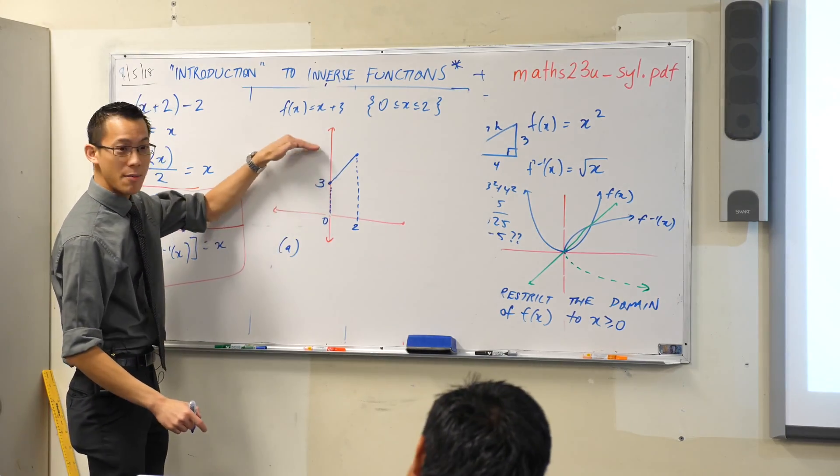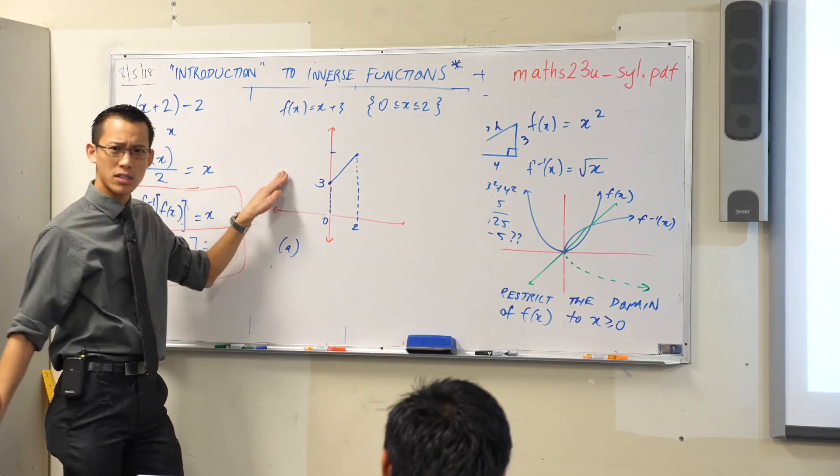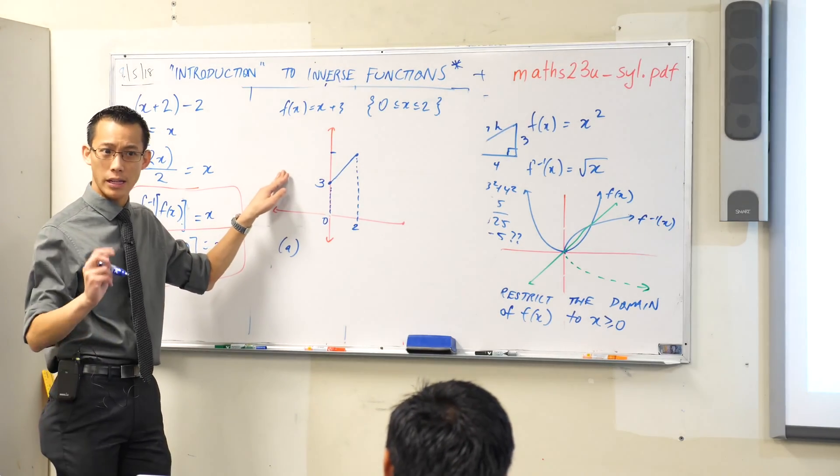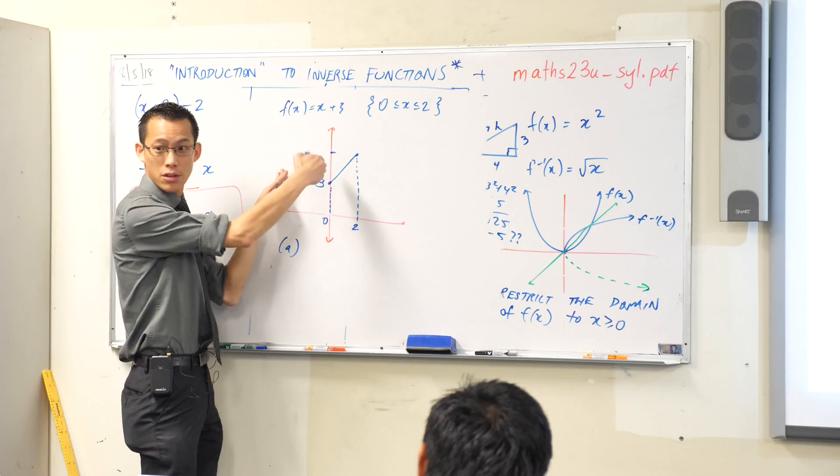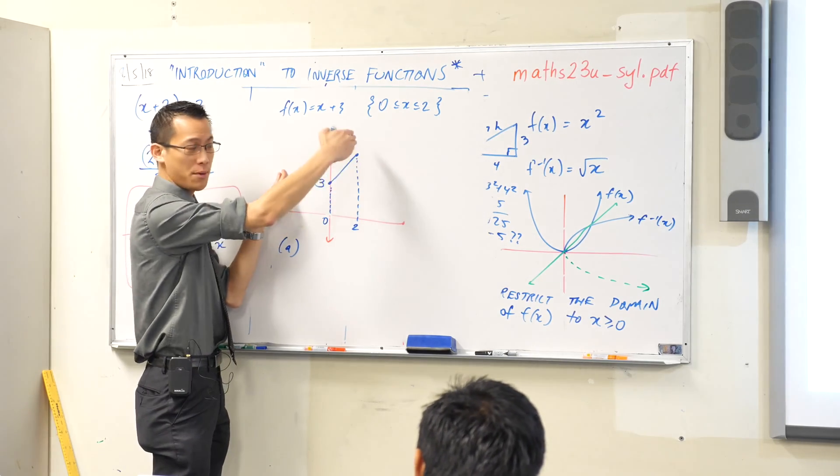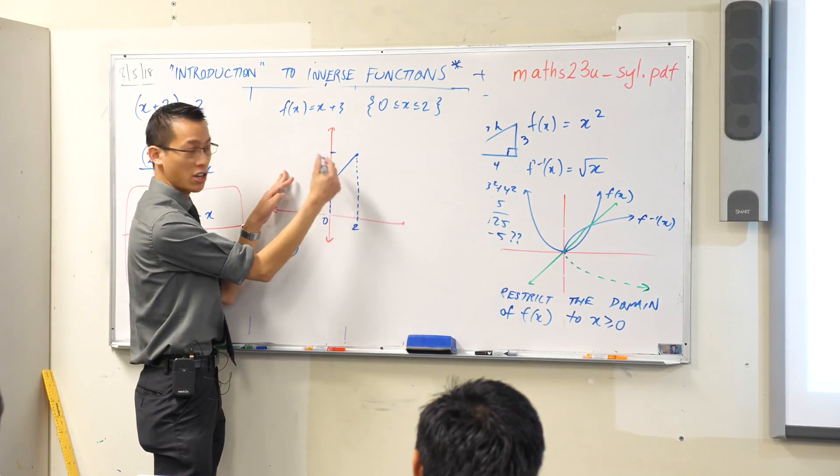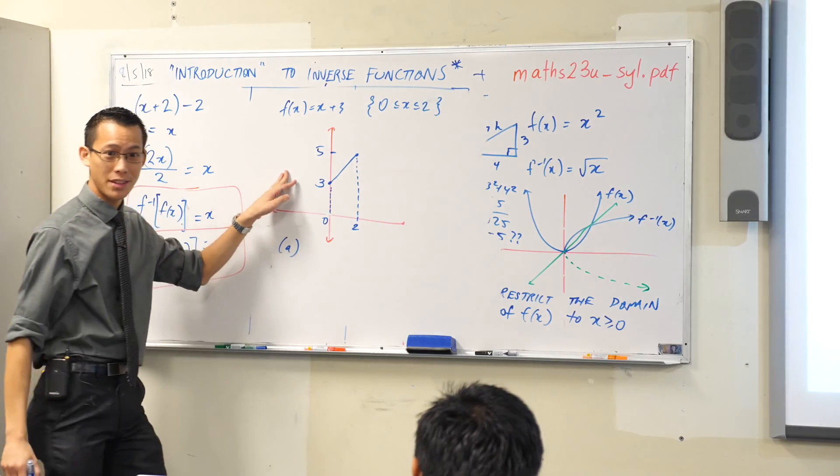And then I go up, I climb up a little bit to here. What's the gradient in this line again? It's 1. So every time I go across a unit, I go up a unit. Across a unit, up a unit. That means if you're going to cross 2, you're going to go up 2 as well. Is that okay?